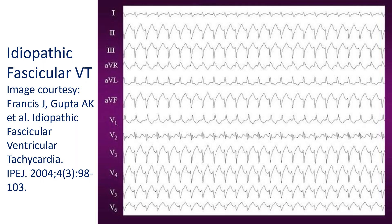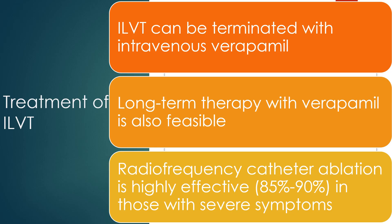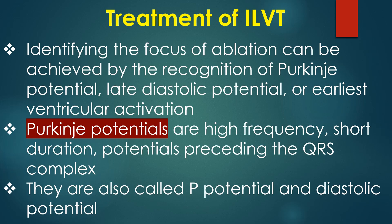Idiopathic left ventricular tachycardias are verapamil-sensitive fascicular tachycardias. Three types are described: an RBBB left axis pattern originating from the left posterior fascicle, an RBBB right axis pattern originating from the left anterior fascicle, and left fascicular tachycardia with normal axis. ILVT can be terminated with intravenous verapamil, and long-term therapy with verapamil is also feasible. Radiofrequency catheter ablation is highly effective in those with severe symptoms. Identifying the focus of ablation can be achieved by recognition of Purkinje potentials, late diastolic potential, or earliest ventricular activation.